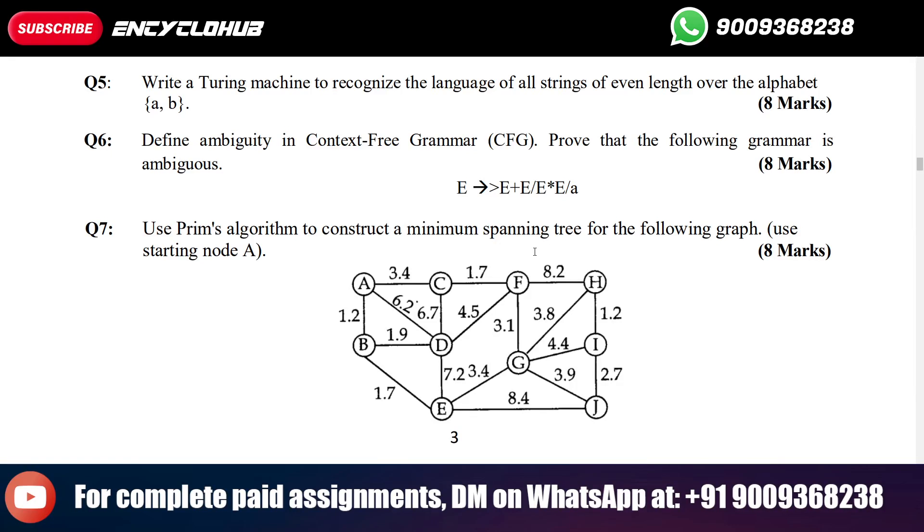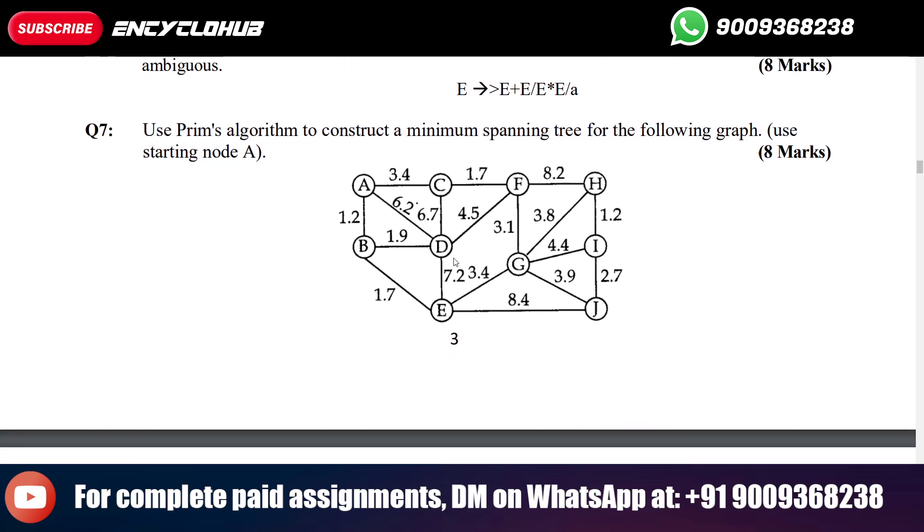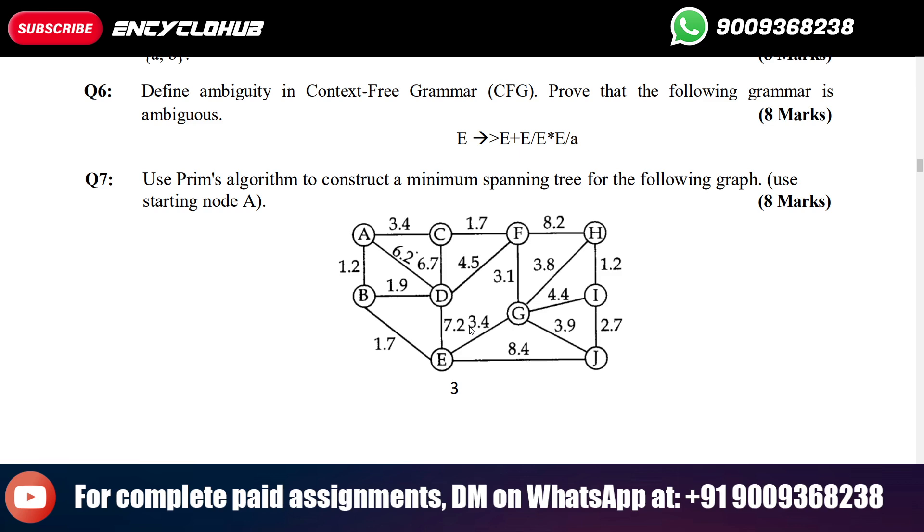Hi guys, today we will see MCS031 MCA assignments. Use Prim's algorithm to construct a minimum spanning tree for the following graph, using starting node A. This is the graph you can see.